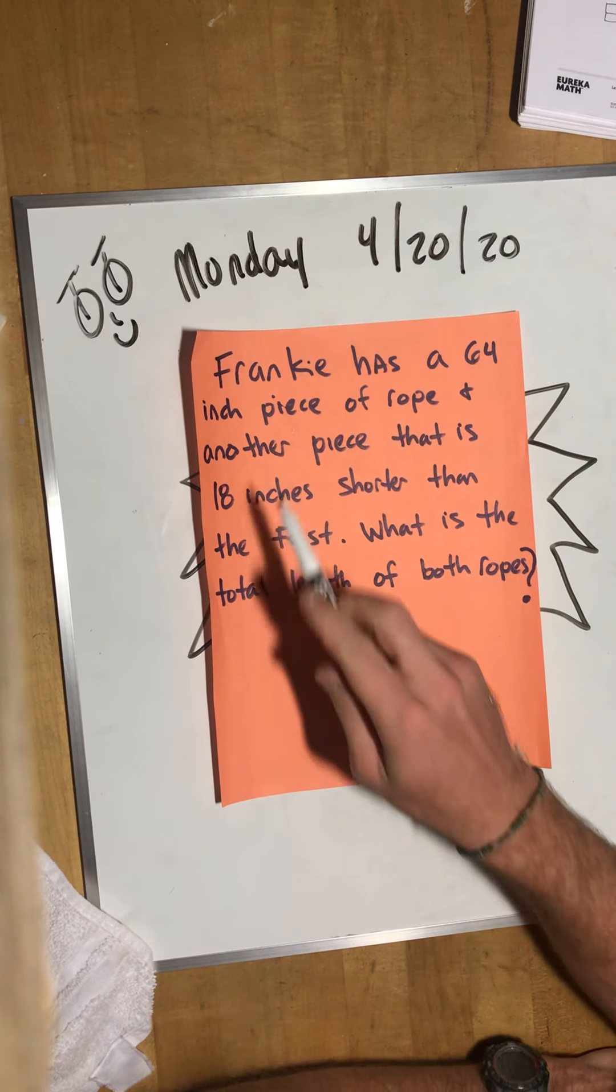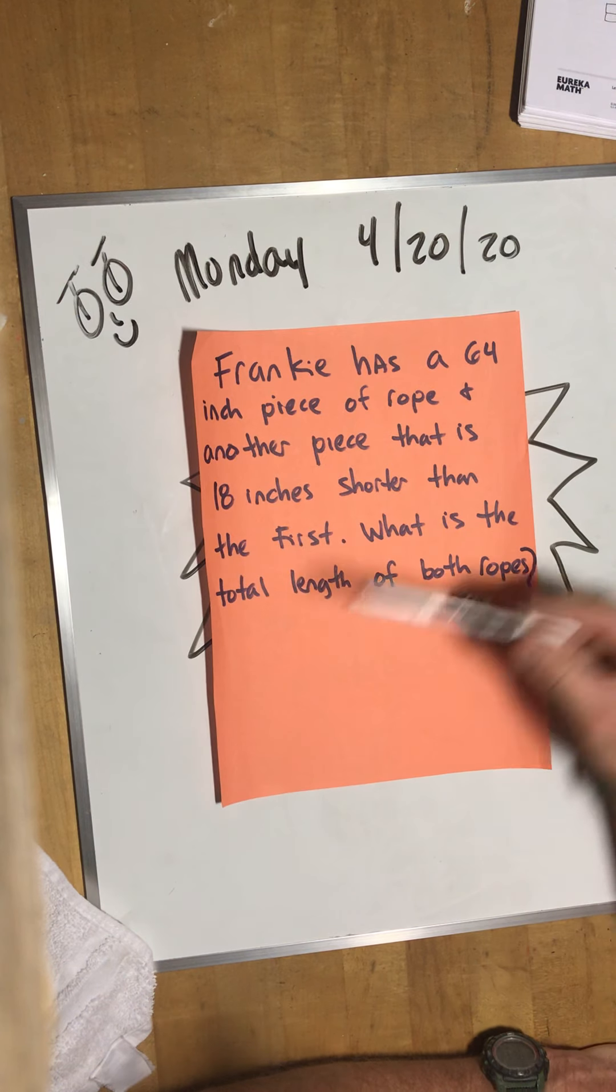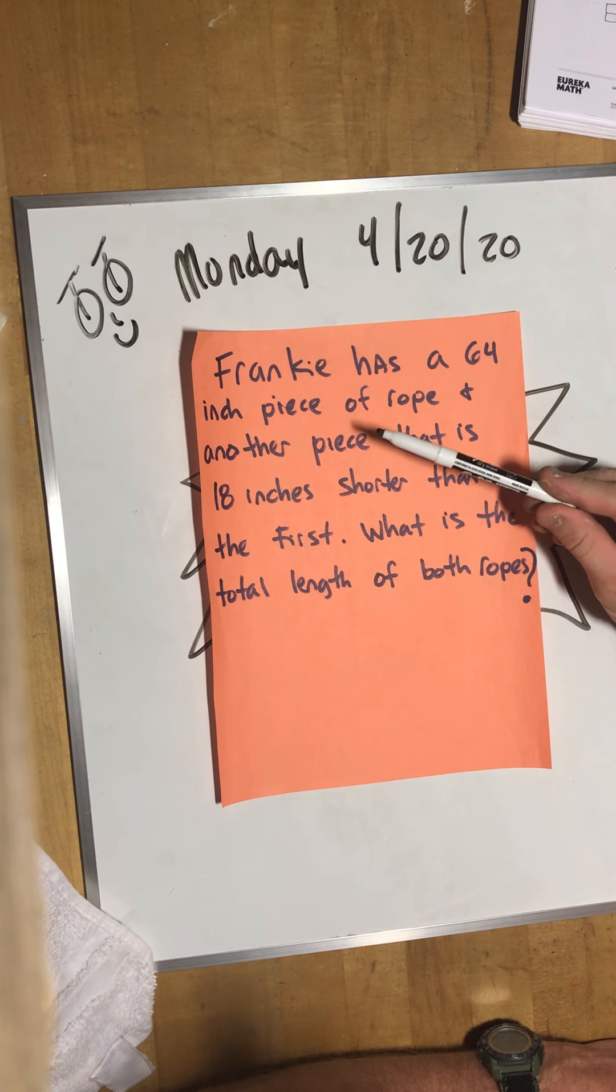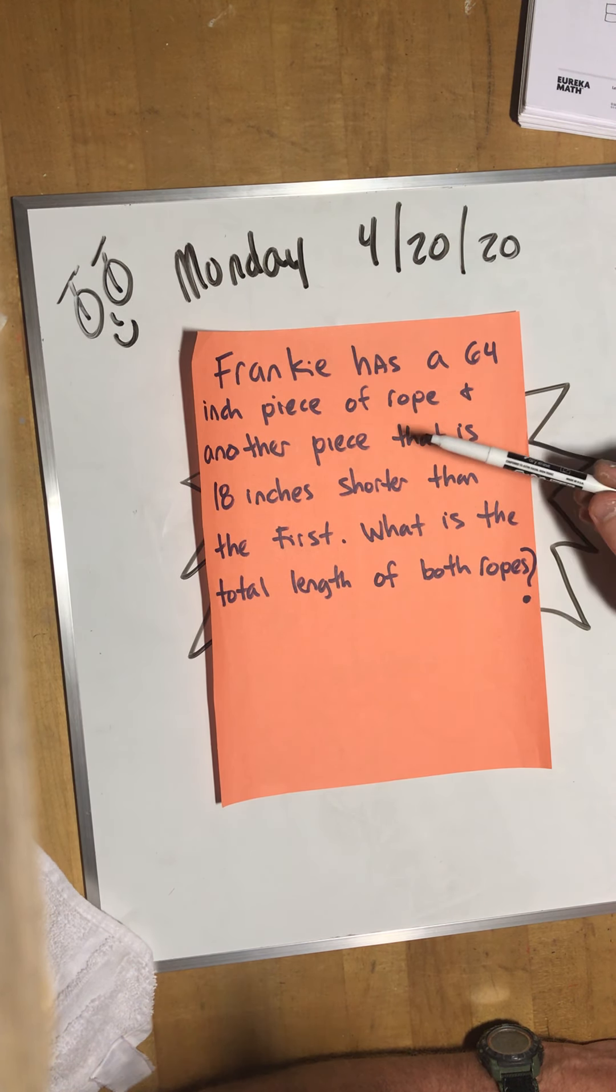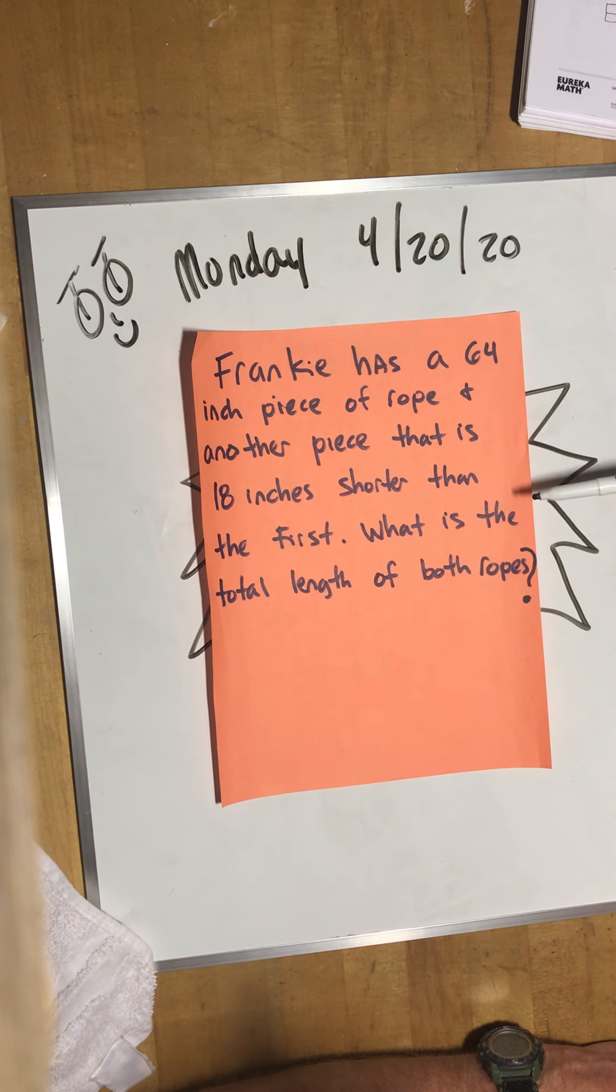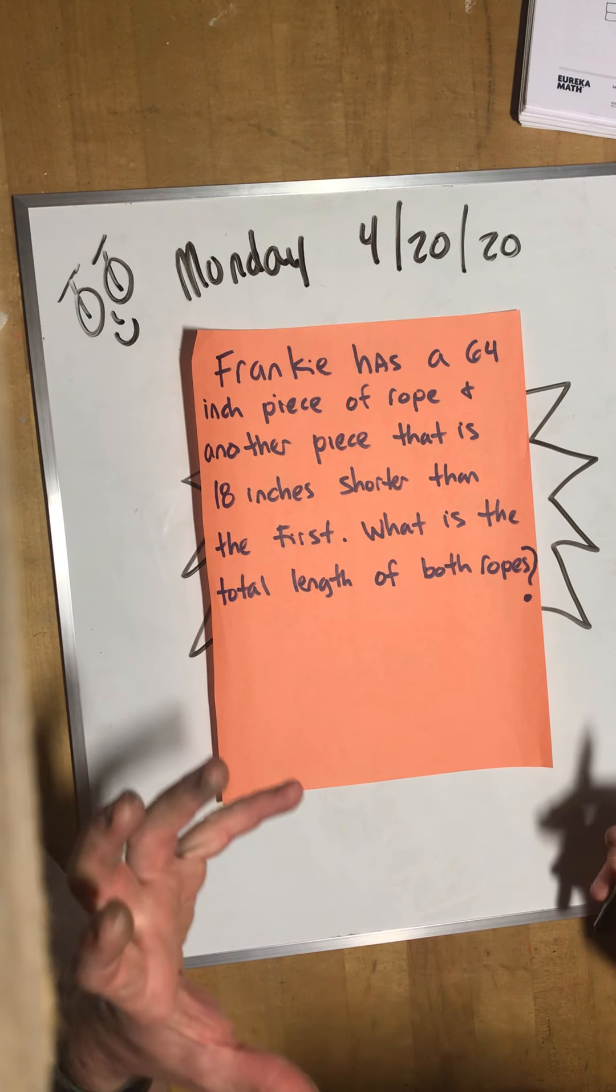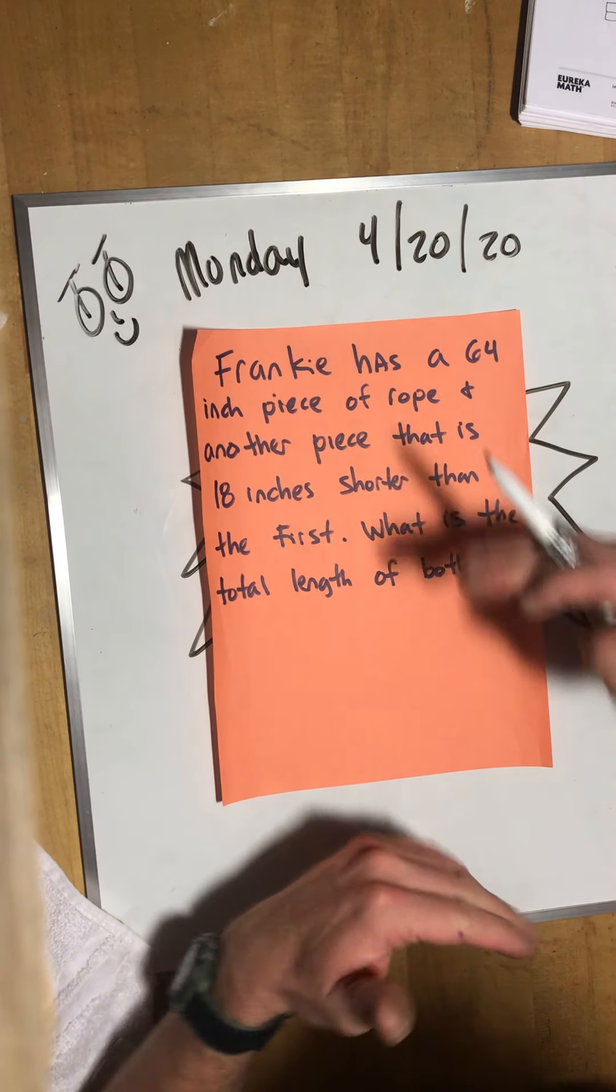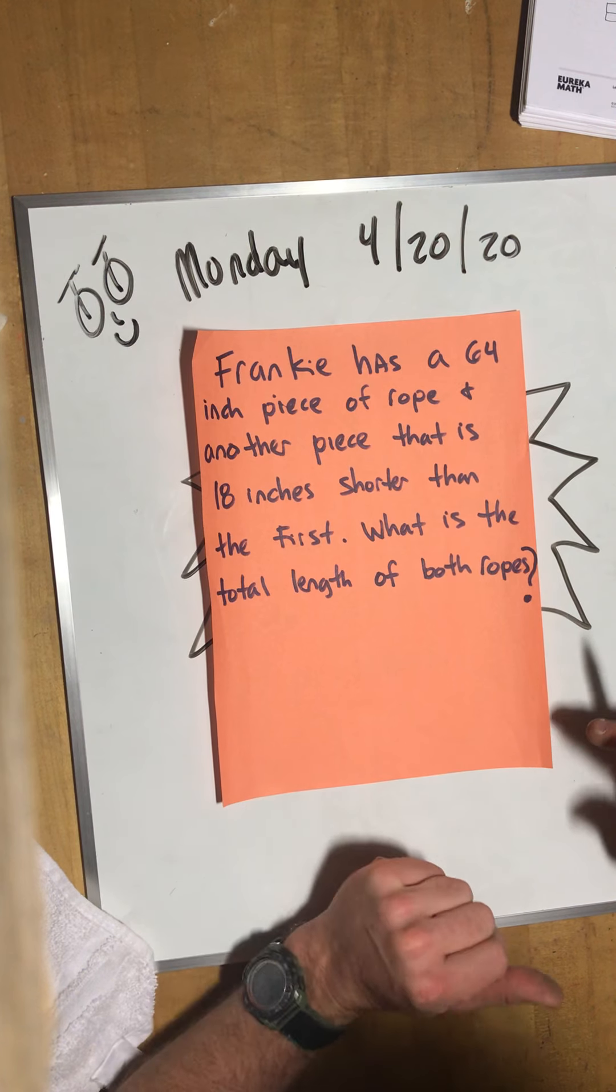Frankie has a 64 inch piece of rope and another piece that is 18 inches shorter than the first. What is the total length of both ropes?